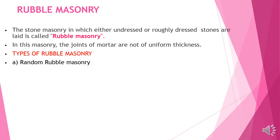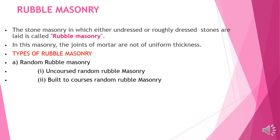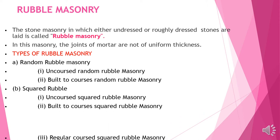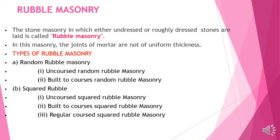Types of rubble masonry: random rubble masonry, which has two categories — uncourse random rubble masonry and built-to-course random rubble masonry. Then there is square rubble masonry, with unsquared, built-to-course, and regular course square rubble masonry. The third category is dry rubble masonry.